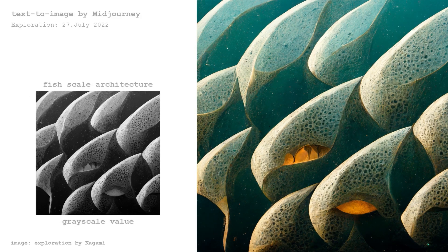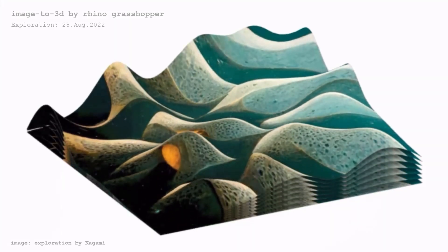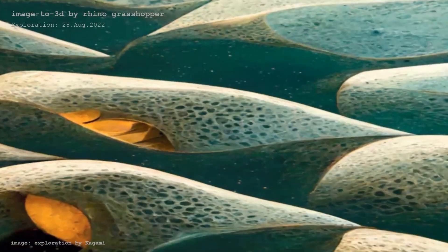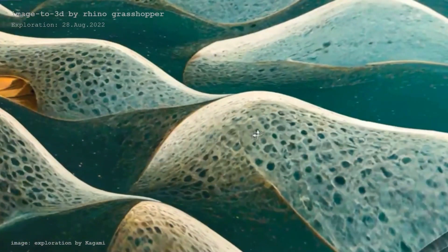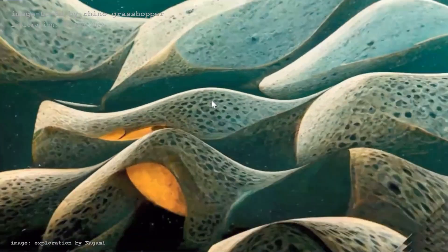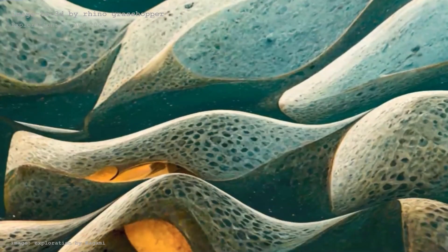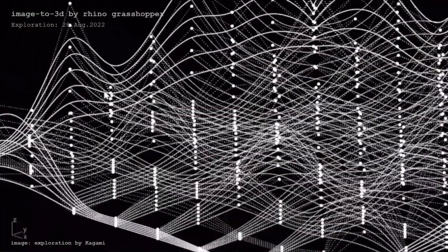This is one of the experiments with Midjourney AI. The prompt is 'fish-scale architecture.' A grayscale image is made based on the original image, and you can see some 3D deformation with different heights — light color parts get higher and dark color parts get lower. In wireframe mode, you can see control points with different heights on the grid.